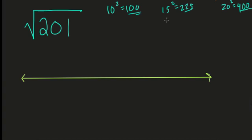Still a little bit too large. So we try one more. Let's try 14. Well, 14 squared is 196.